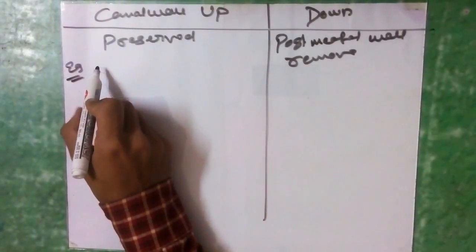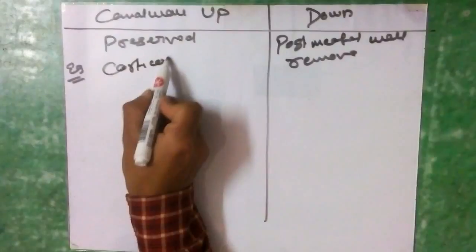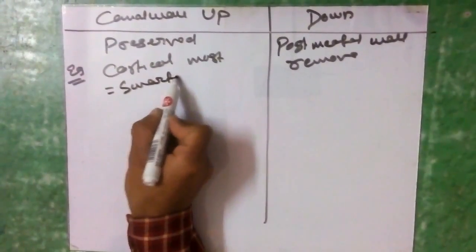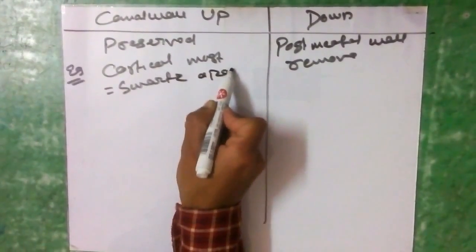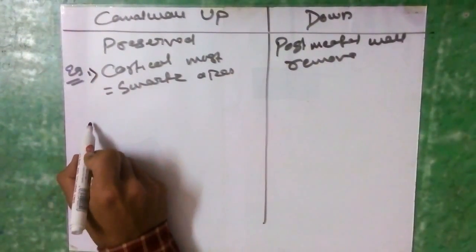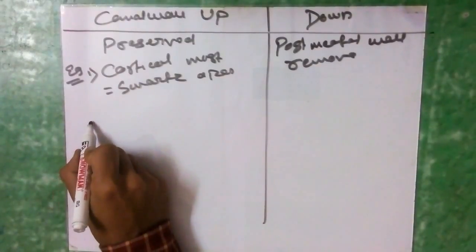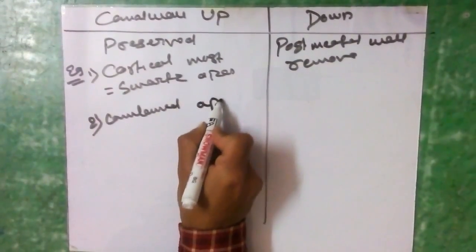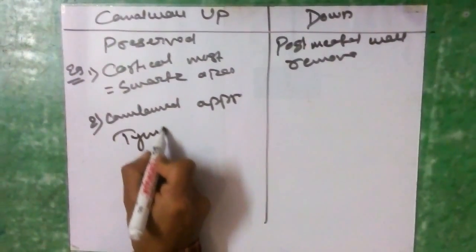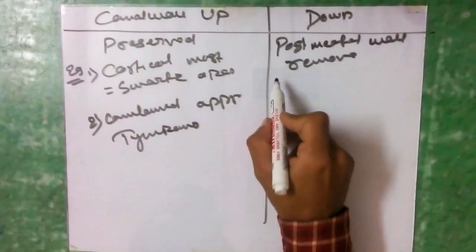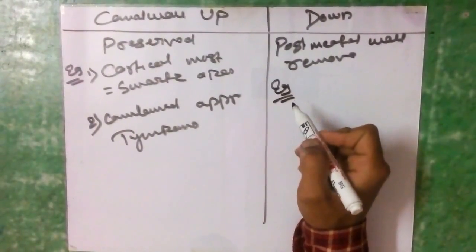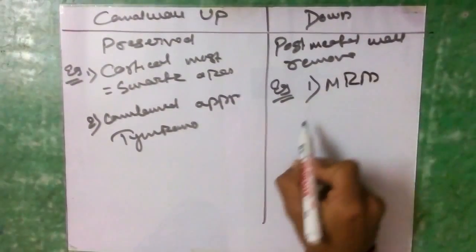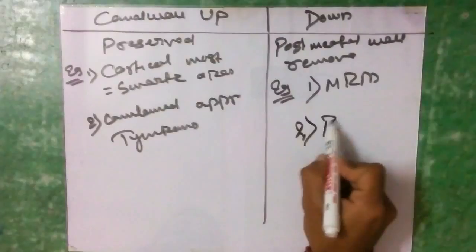Examples of canal wall up surgery are cortical mastoidectomy (also known as Schwarz operation) and combined approach tympanoplasty. Examples of canal wall down surgery are modified radical mastoidectomy (MRM) and radical mastoidectomy (RM).